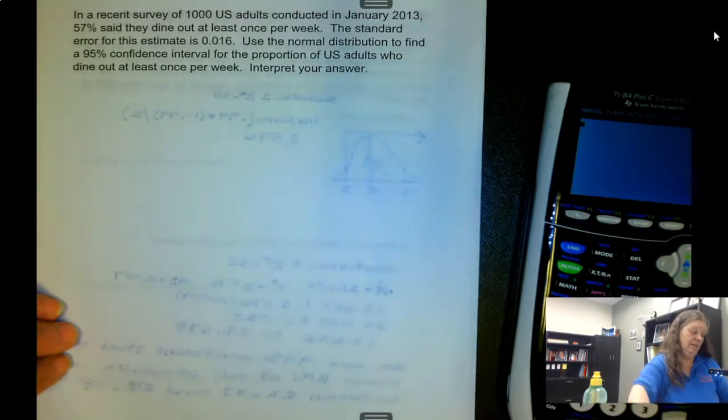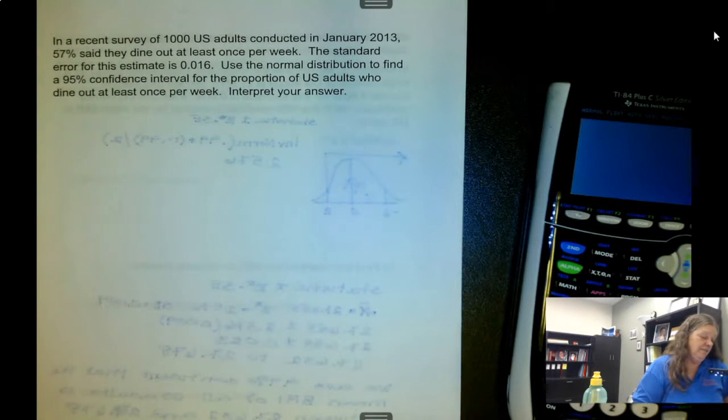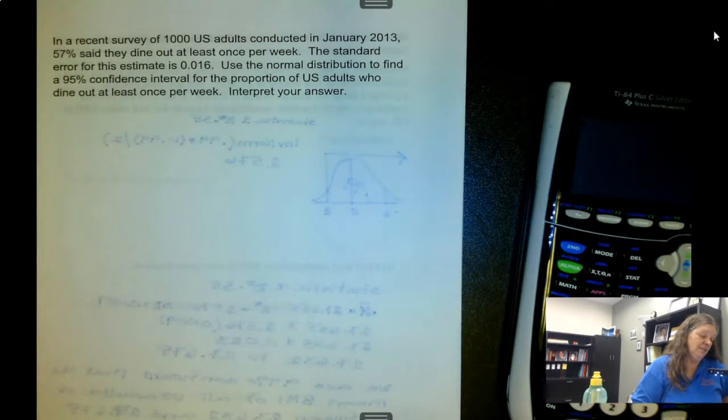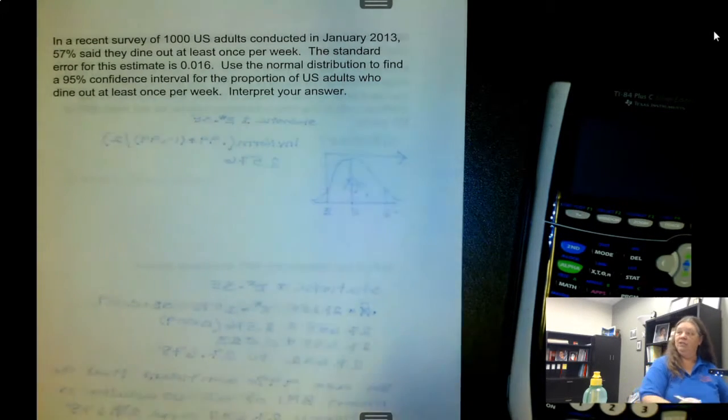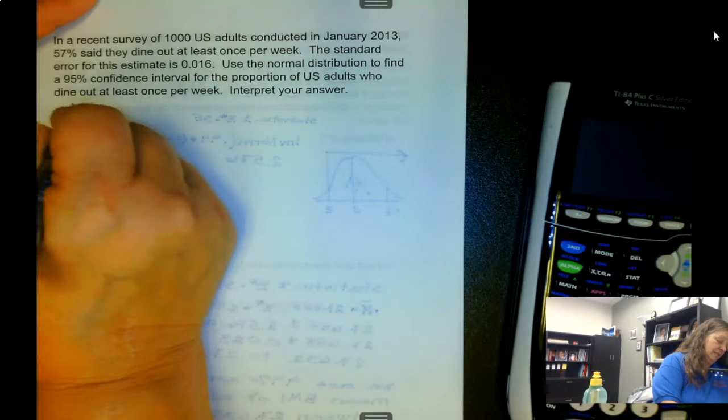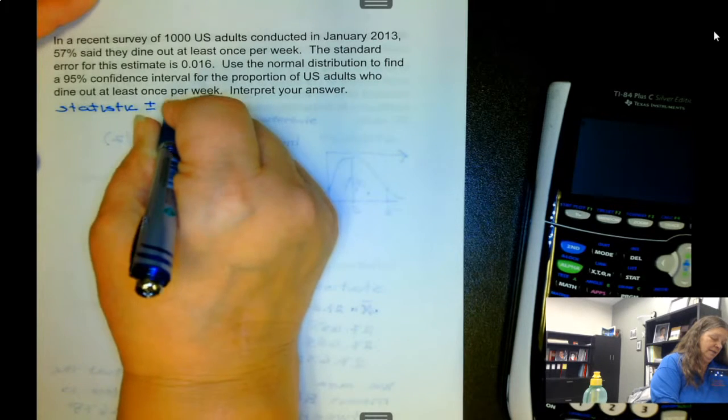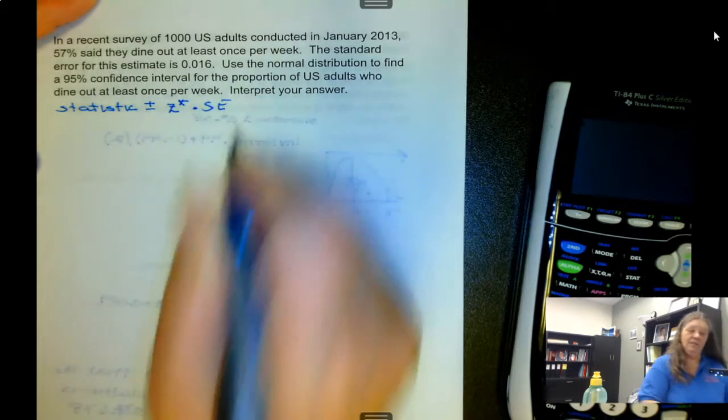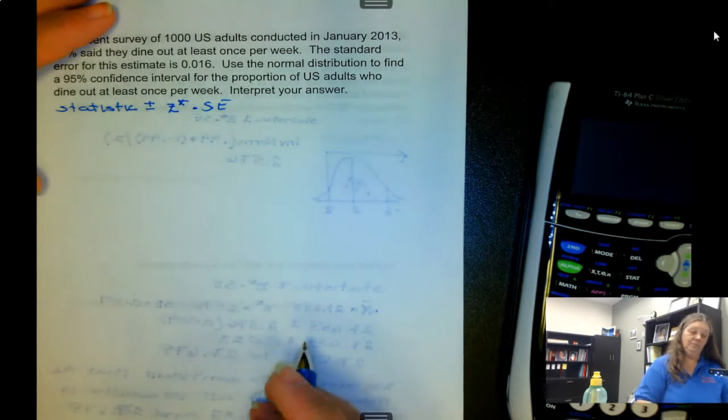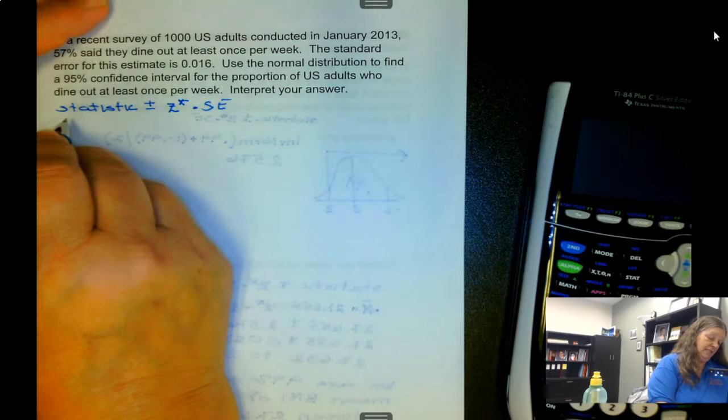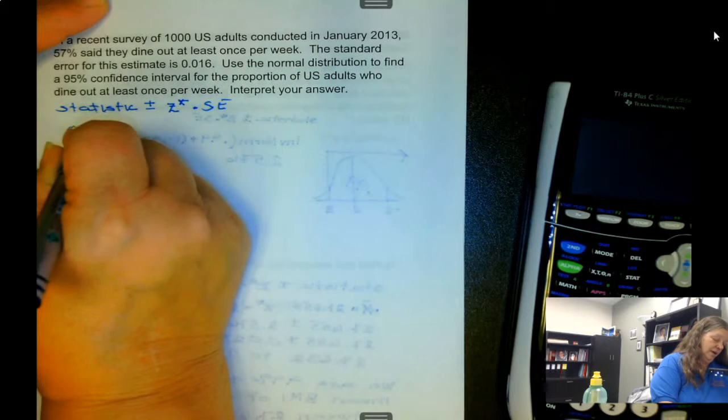Now let's see what this next problem is. A recent survey of 1,000 adults conducted in January 2013, 57% said they dine out at least once per week. Standard error for the estimate is 0.016. Use the normal distribution to find a 95% confidence interval for the proportion of US adults who dine out at least once per week and interpret your answer. So we have our statistic plus or minus z* times the standard error. Well, our statistic is the 0.57.